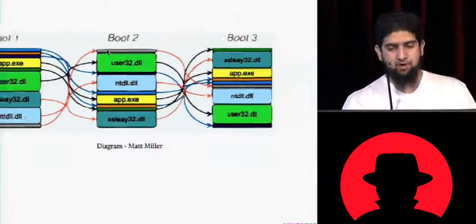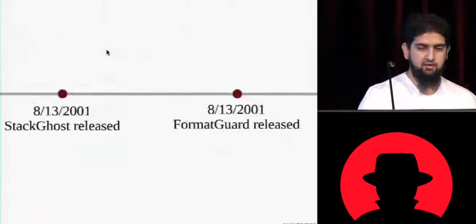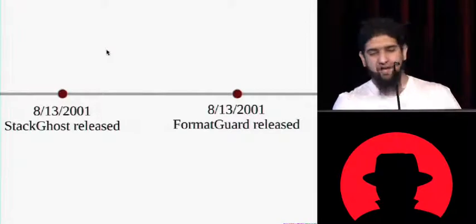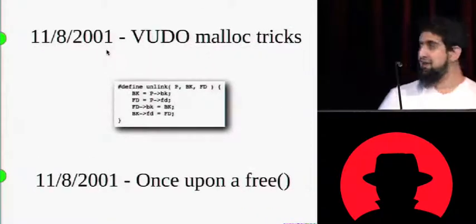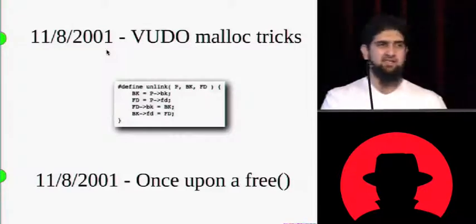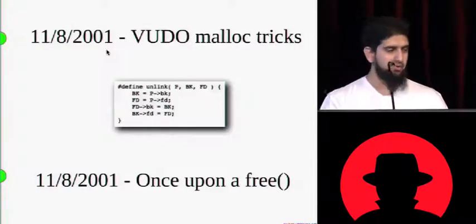StackGhost was released, which is a kernel patch, FormatGuard to protect against format bugs. FormatGuard was also by Crispin Cowan, but the bug class died everywhere except Oracle, so it didn't really take off.